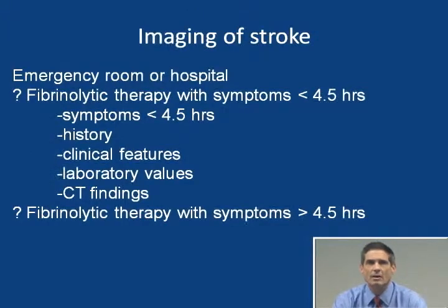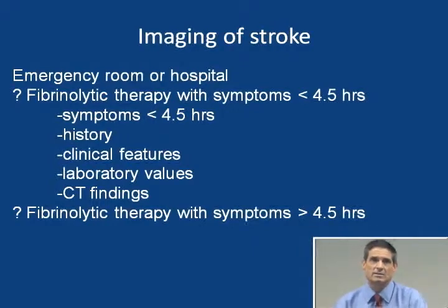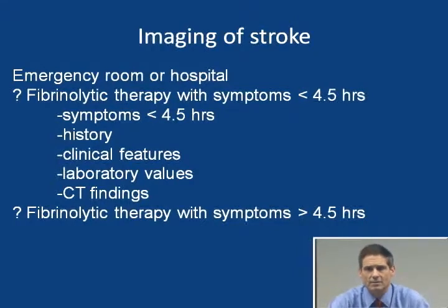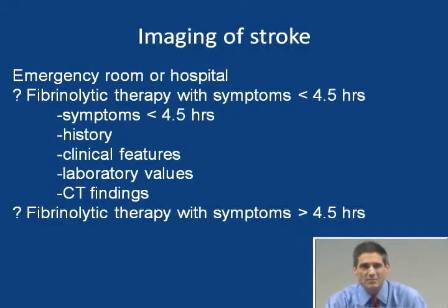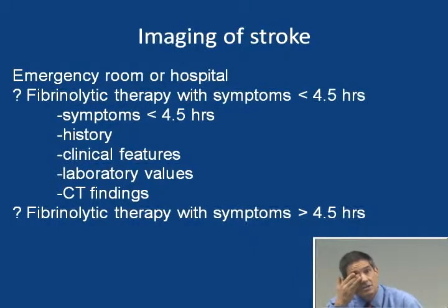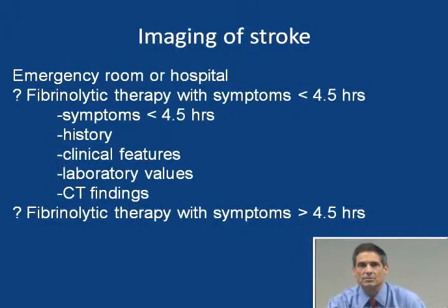Stroke patients typically end up in an emergency room rather than a primary care office. The critical acute decision is usually whether to administer fibrinolytic therapy — specifically recombinant tissue plasminogen activator (TPA, also called alteplase) — as soon as possible. ER physicians and neurologists in stroke centers make that decision. The duration of symptoms must usually be less than four and a half hours, and there are multiple historical, clinical, laboratory, and CT exclusion criteria to consider.